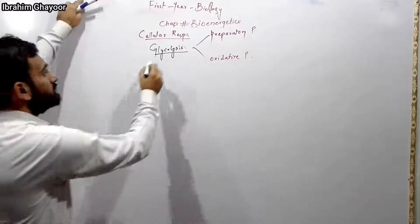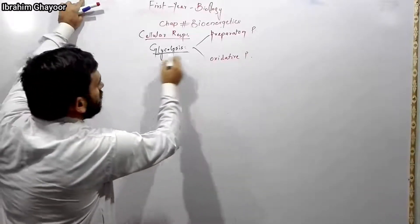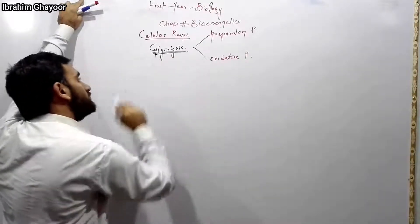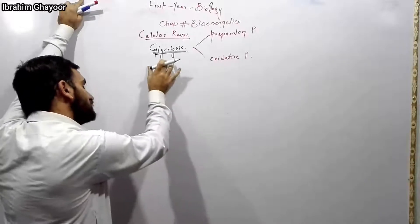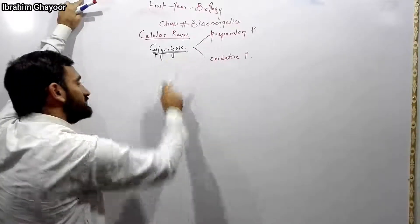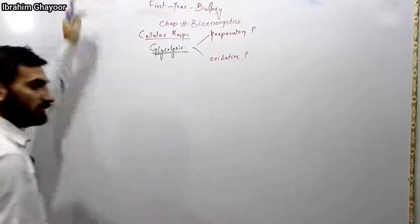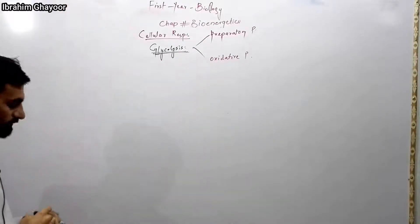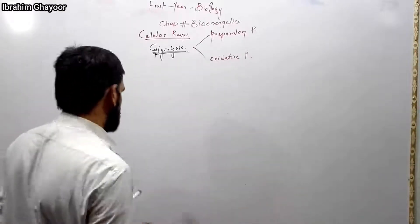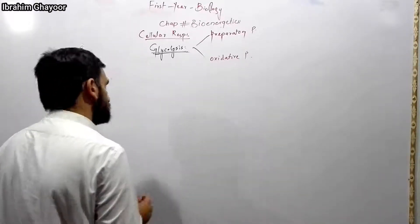Glycolysis: 'glyco' means sugar or glucose, and 'lysis' means splitting. One molecule of the six-carbon compound glucose is converted into two molecules of pyruvic acid — a three-carbon compound.